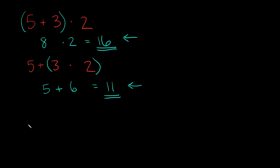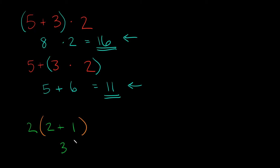Let's do another example. What if I wrote two and in parentheses two plus one? You do whatever is inside the parentheses first: two plus one equals three. Now there's a number outside the parentheses with no symbol — no multiplication, division, addition, or subtraction sign. It's literally just a number next to the parentheses, and whenever you see that it means multiply. So we have two multiplied by three, which equals six. That's how you deal with parentheses.